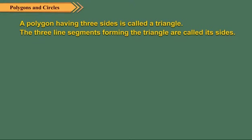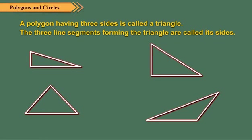A polygon having 3 sides is called a triangle. The 3 line segments forming the triangle are called its sides. Can you draw a polygon having less than 3 sides? Of course not! Because a triangle is a polygon having the least number of sides.